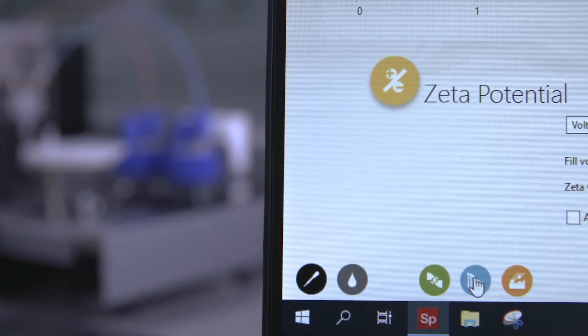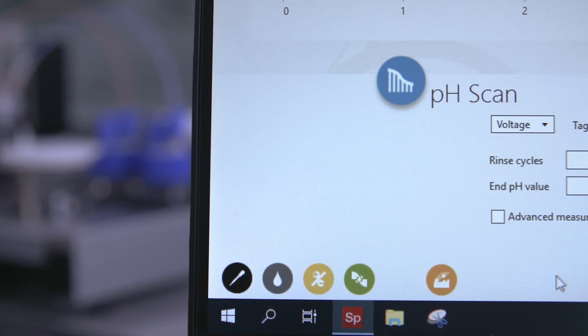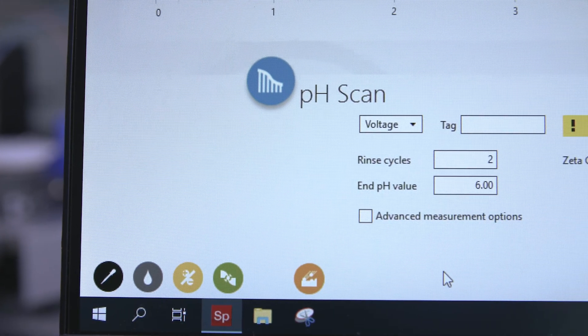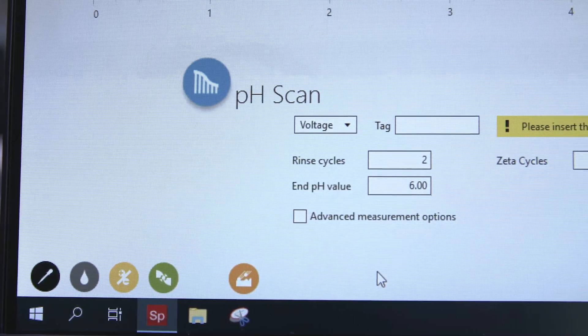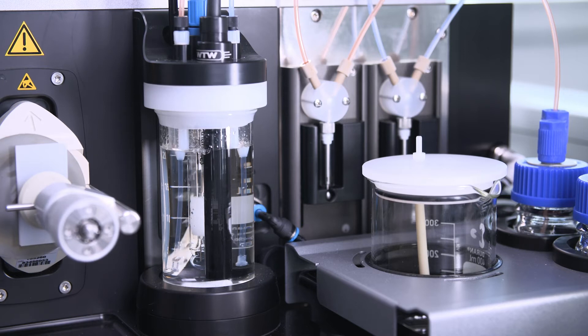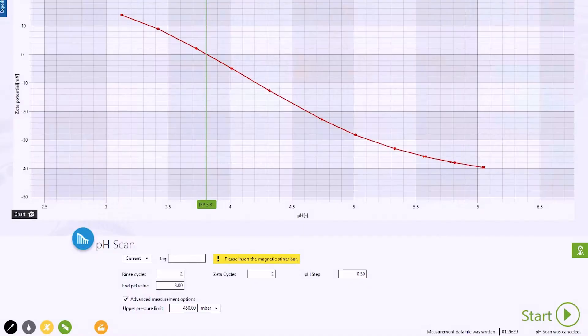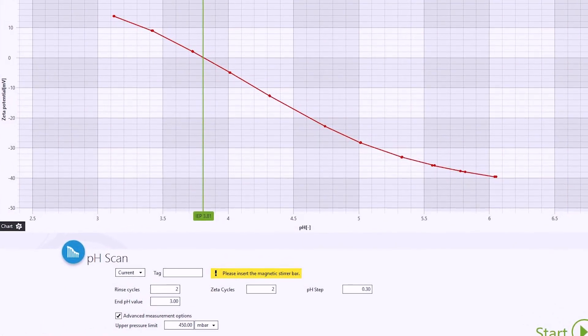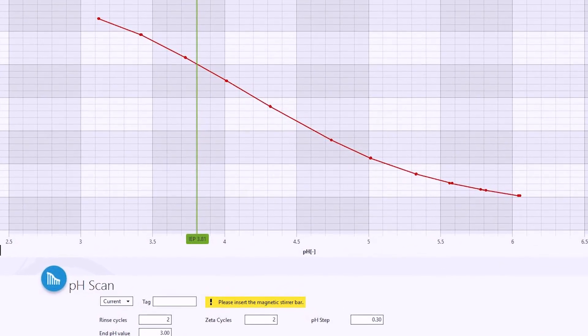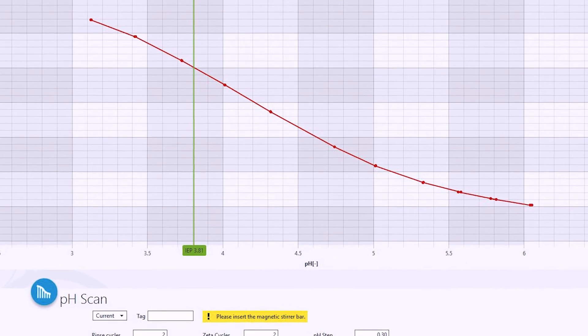Thanks to the integrated dosing unit, pH scans can be performed fully automatically after setting the measurement parameters. The characterization of the zeta potential with respect to the pH reveals what's known as a titration curve. This evolution of the surface charge with pH provides information on the surface chemistry and on the isoelectric point of the solid sample.